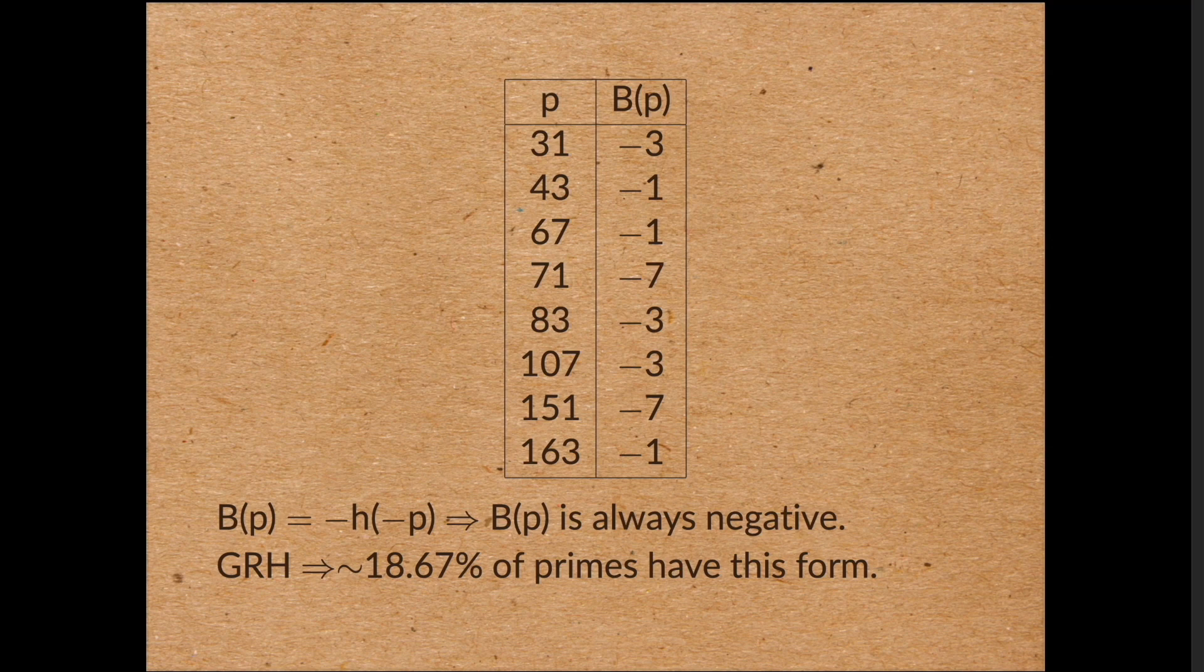Now we already noted that two thirds of the primes have even period, and so average digit exactly 4.5. So 18% is more than half of the primes left over. So assuming the generalized Riemann hypothesis, it follows that it's more likely that the average digit of 1 on p is less than 4.5, than the average digit is more than 4.5.